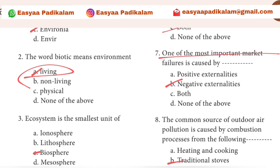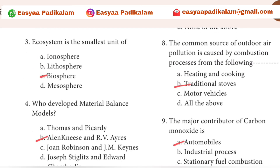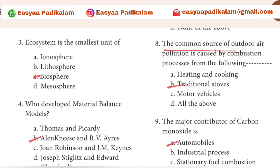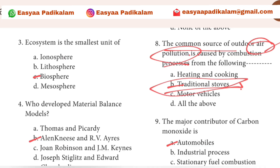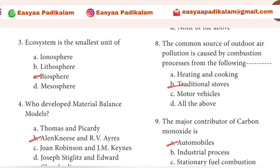7th question: one of the most important market failures is negative externalities. The common source of outdoor air pollution — air pollution is exposed to the traditional stove. If you don't control the stove, the answer is traditional stove.